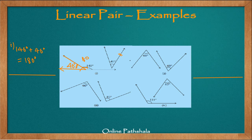Looking at the second example, both angles are acute angles. We discussed earlier that two acute angles cannot form a linear pair. Taking the sum: 60 degrees plus 60 degrees gives 120 degrees, which is not equal to 180 degrees. Therefore, we do not get opposite rays, and these are not a linear pair.